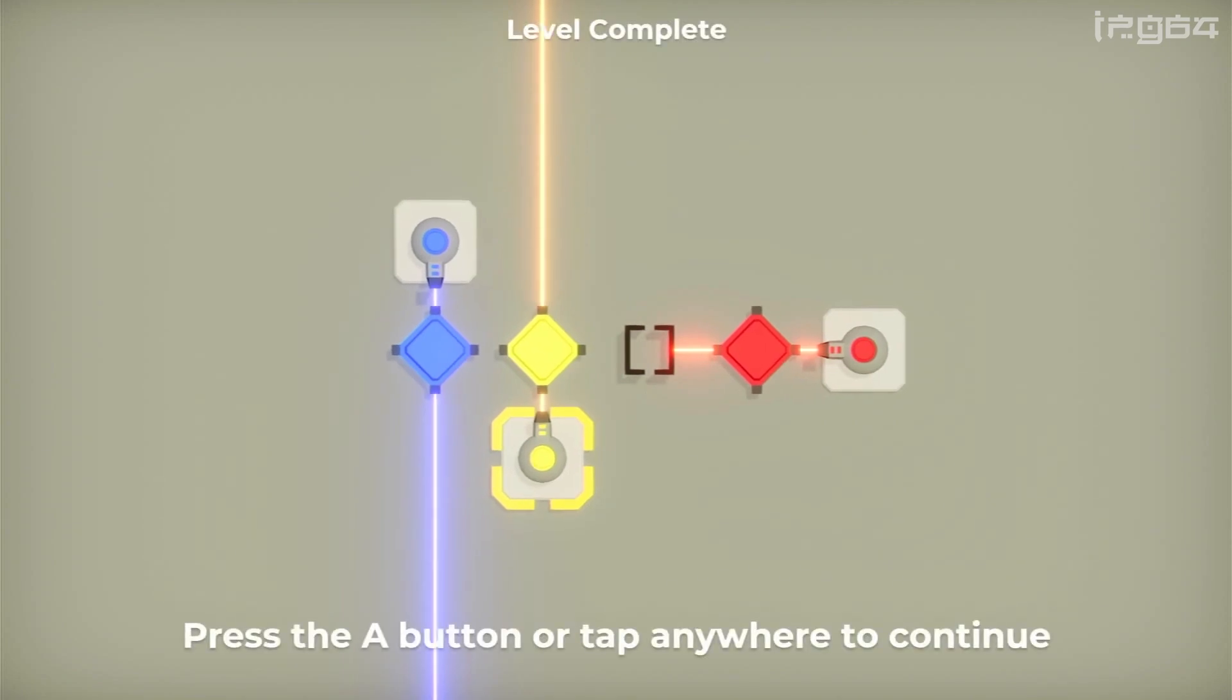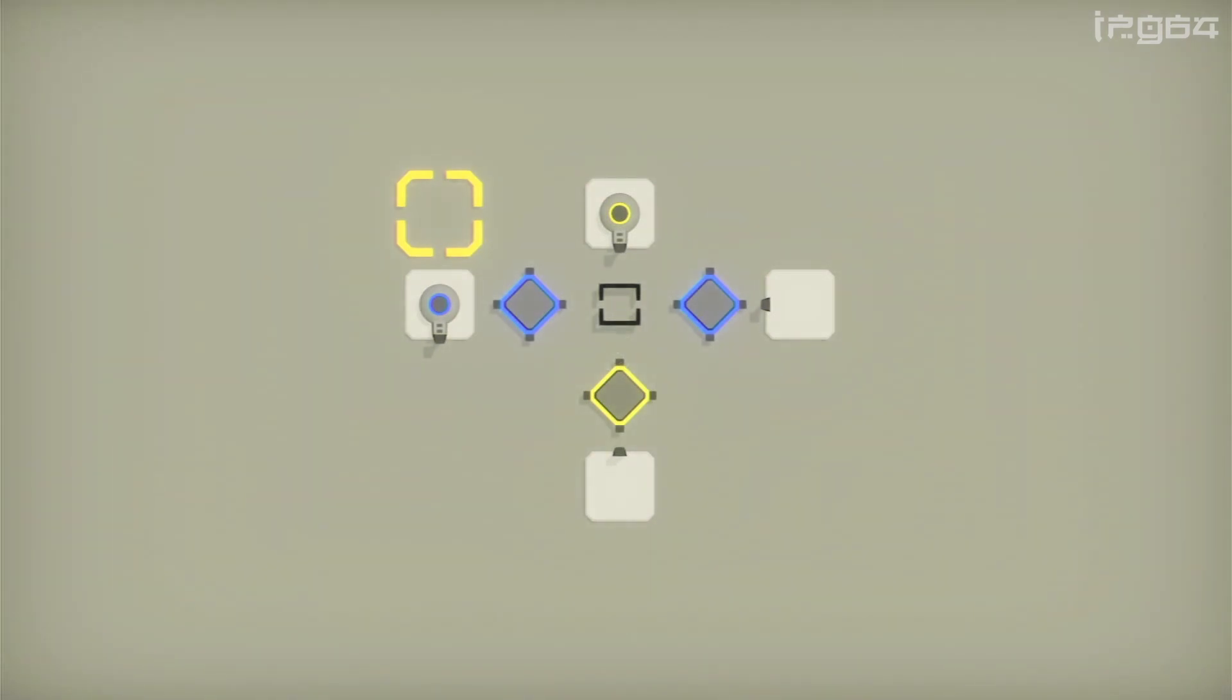Now, they do introduce some other bits and pieces later on, like mirrors and such, and other colors as well. Also some blockers like that thing where, in the middle of the screen, there's like a blocker which stops that yellow one going through. So, you have to put the yellow one at the bottom, basically.